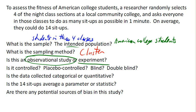Is it a controlled experiment? Nope. Placebo-controlled? No placebos. Blind or double-blind? Nope, and no. Because we don't have a control group, people don't need to not know what group they're in — they're in the do-sit-ups group. There's only one group here.